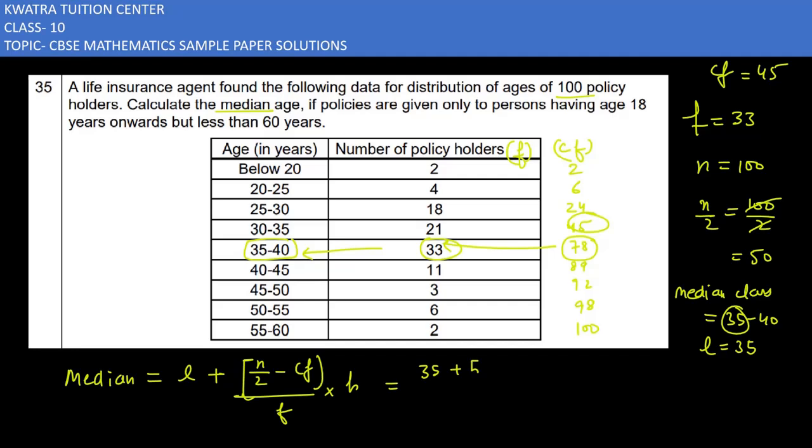Plus N by 2, which is 50, minus CF, which is 45, and then frequency. It will be 50 minus 45 over 33, and the height is 5.